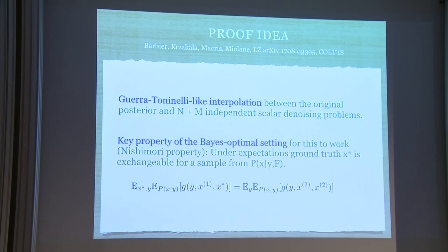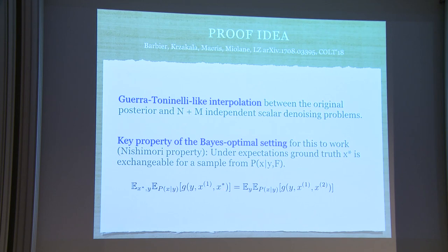One really key element of the proof that cannot be replaced is what we call the Nishimori property — a key property of the Bayes-optimal setting. If you know the model that generated the data and can write the exact posterior with the right likelihoods and priors, then a sample from the posterior can, under expectation, be exchanged with the ground truth and vice versa. This is used at key parts of the proof, and without it the proof breaks. This is the current bottleneck: to prove replica formulas we need to be in the Bayes-optimal setting. The matrix elements don't need to be Gaussian but must be independent.